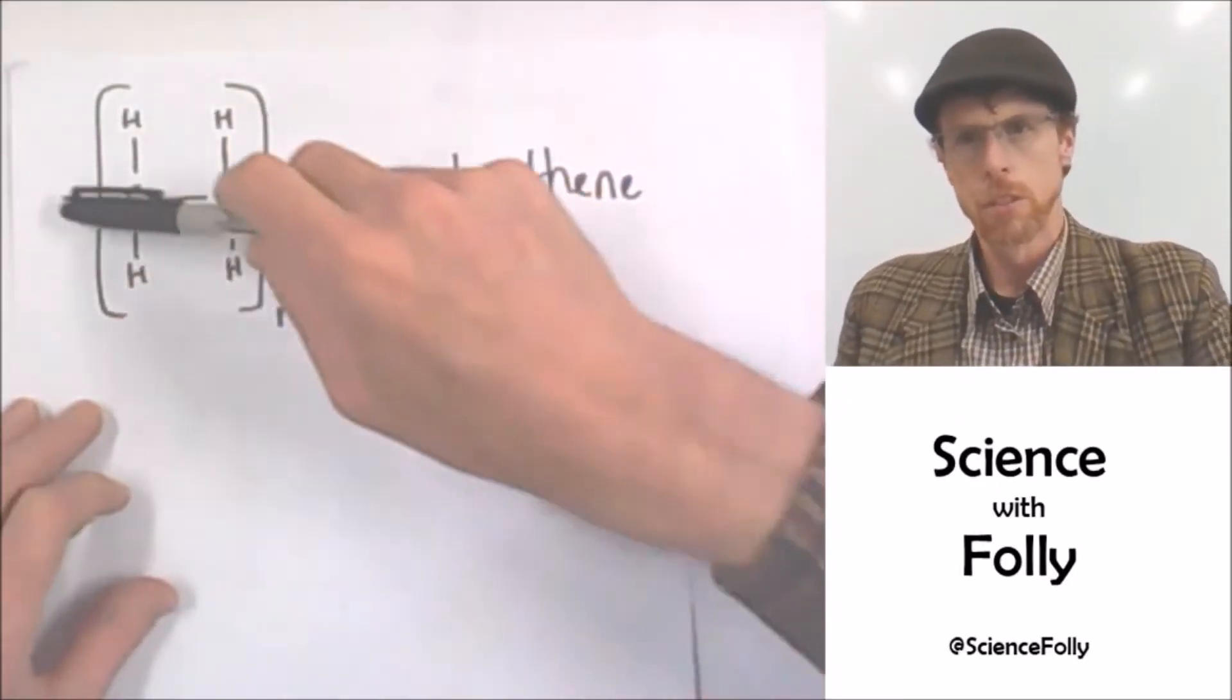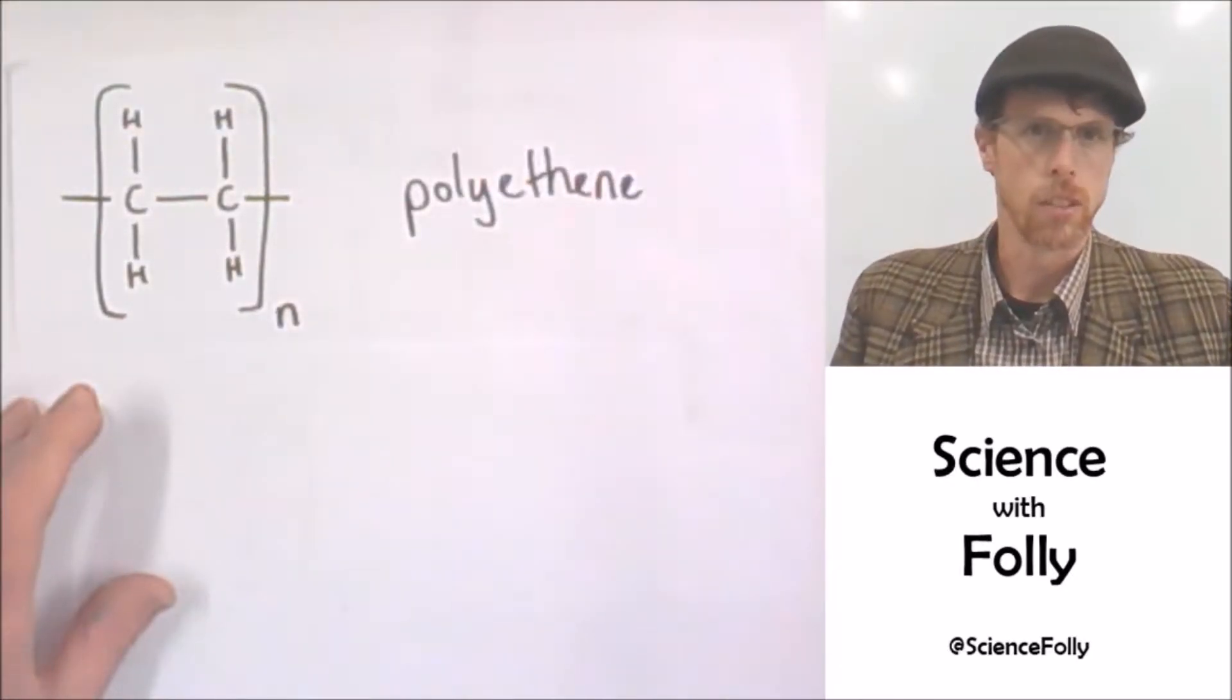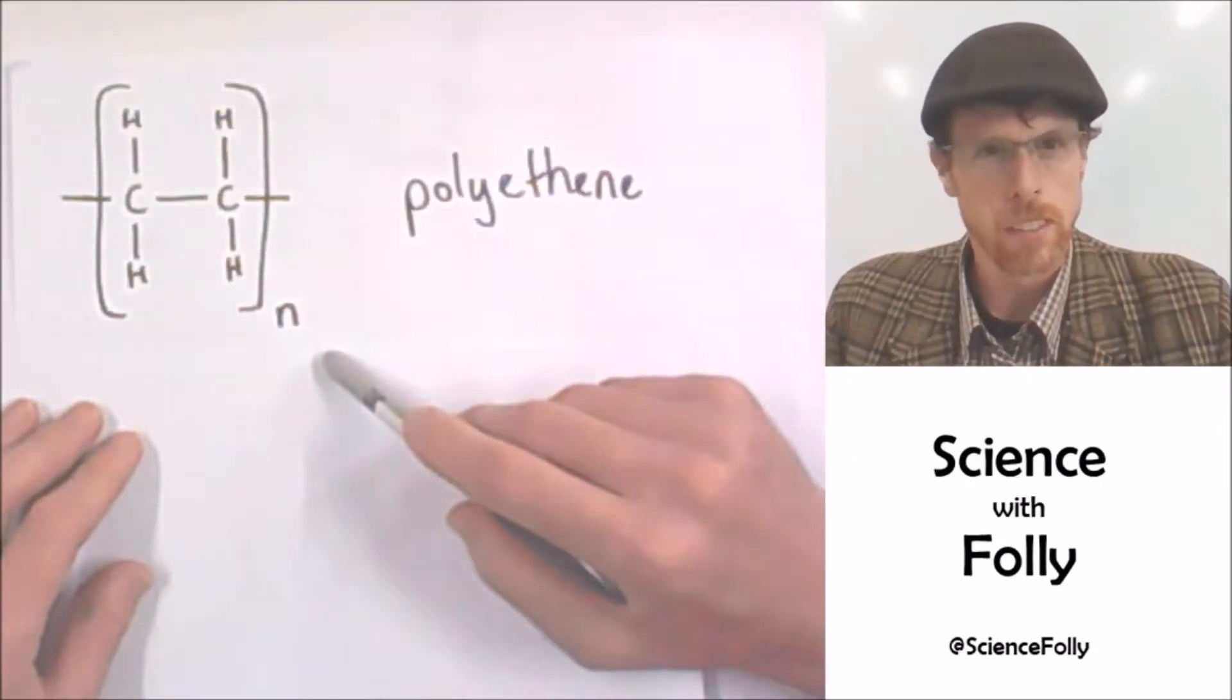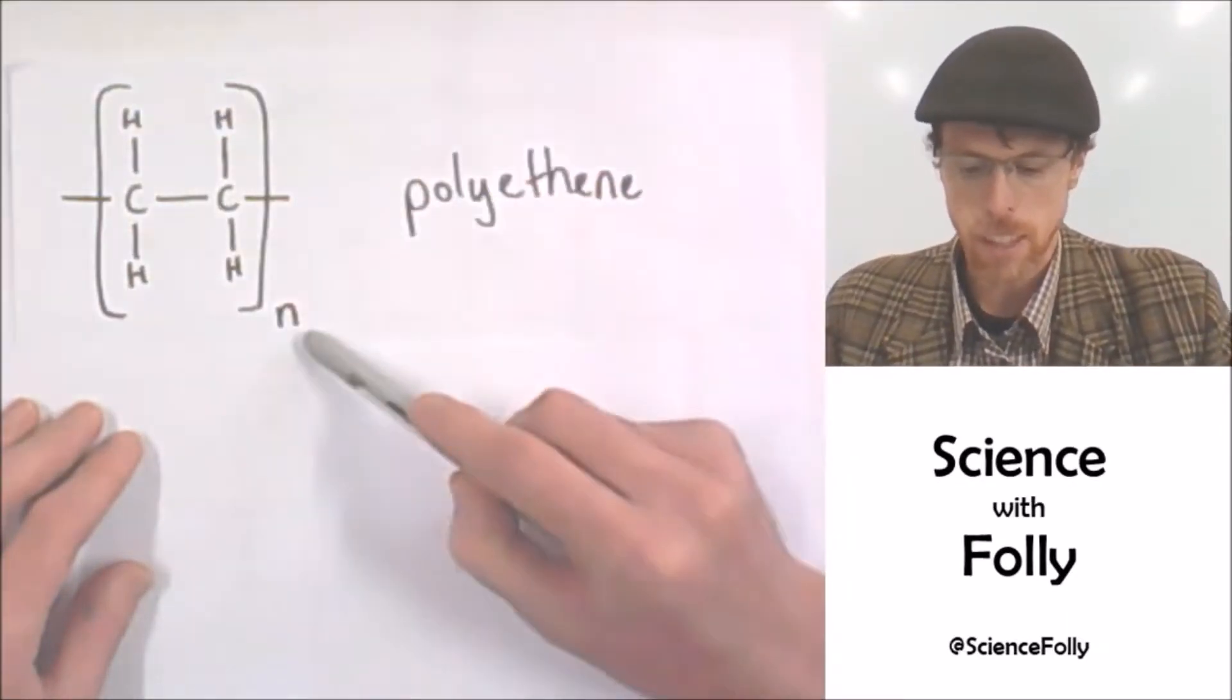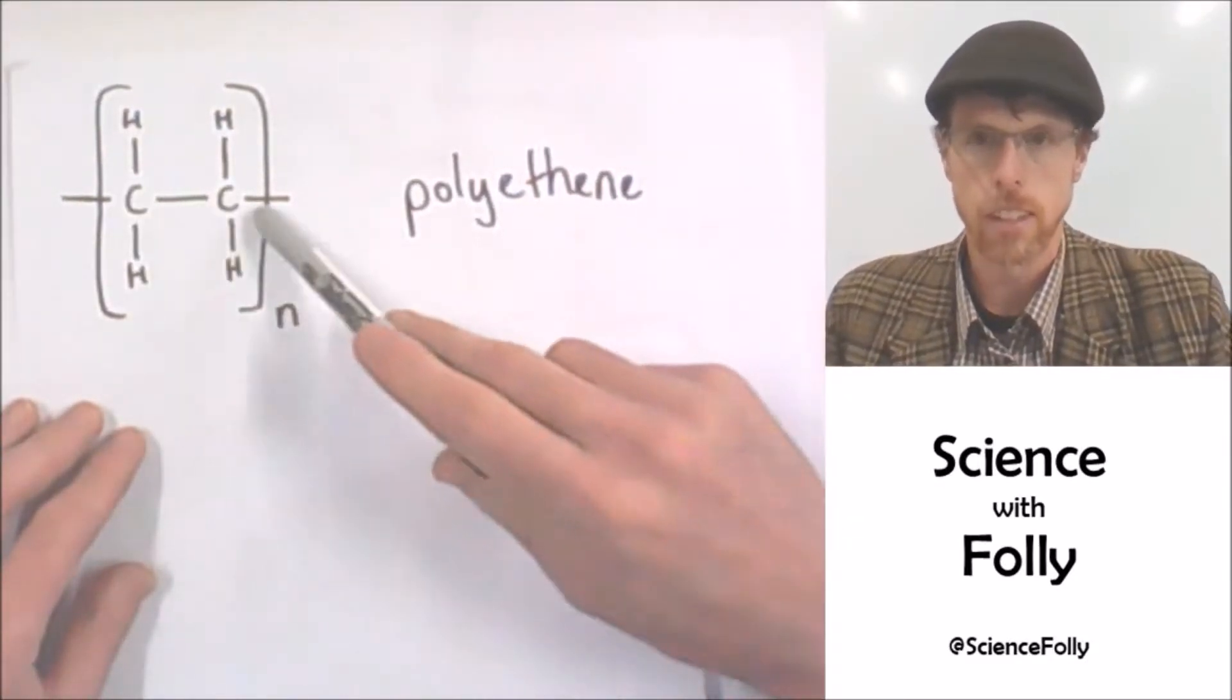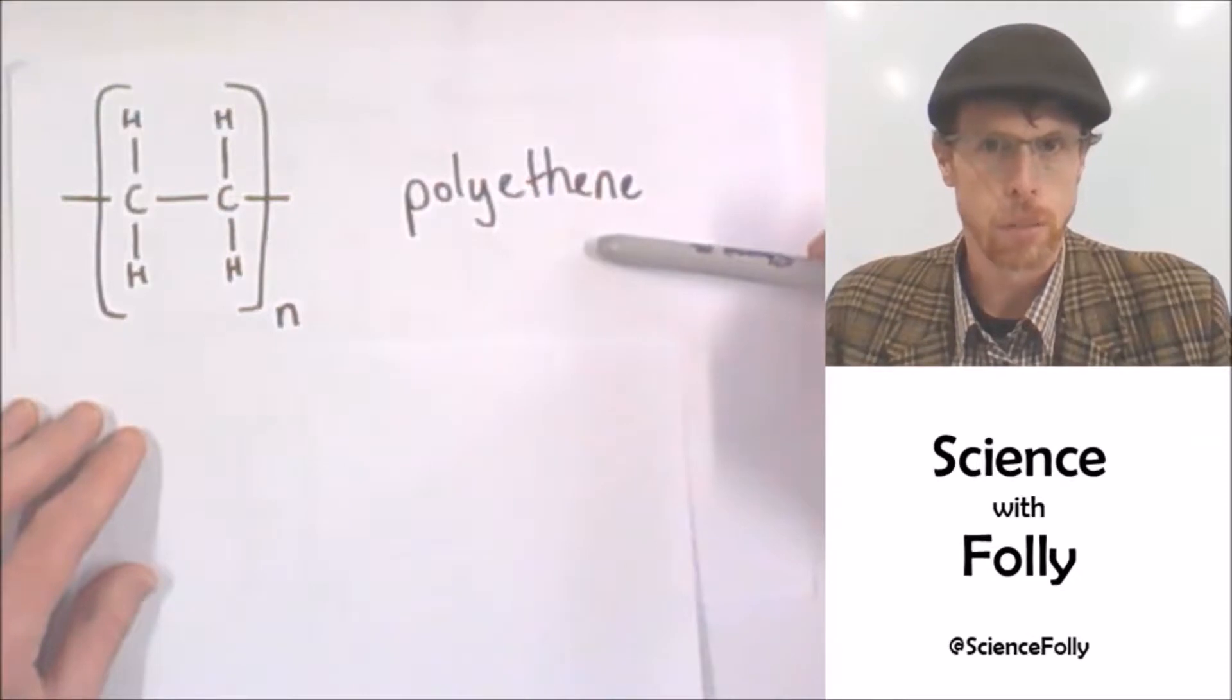So rather than drawing a really, really long molecule, because these polymer molecules can be enormous, we simplify them by showing the simplest unit in brackets and N just means there's heaps and heaps of them. And this obviously is the simplest unit for polyethene.